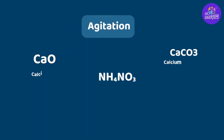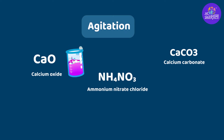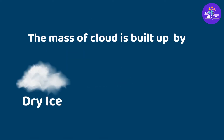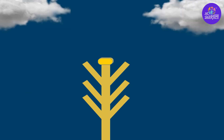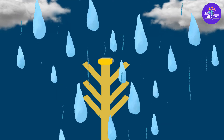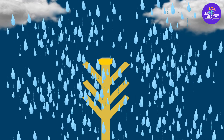Chemicals such as calcium oxide, ammonium nitrate, chloride, and calcium carbonate are used to stimulate and form clouds. Second, the mass of clouds is built up by using dry ice, urea, or salt. Third, these supercool chemicals are bombarded with pressurized canisters to build water droplets. This makes them rain.